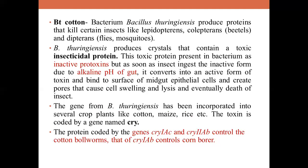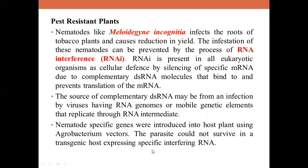Once activated, the toxin binds to the surface of midgut epithelial cells and creates pores, causing cell swelling and ultimately lysis, leading to the death of the insect. The Bt gene has been incorporated into crops like cotton, maize, and rice. Different genes code for different proteins active on different insects — for example, Cry1-AC and Cry2-AB control cotton bollworms, while Cry1-AB is used to control the corn borer.